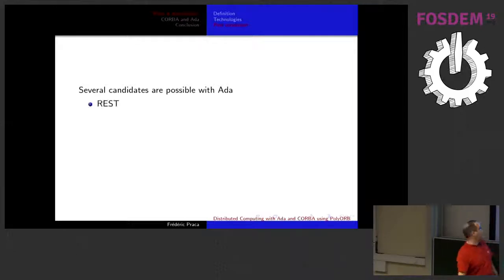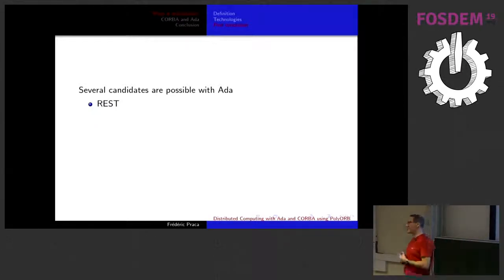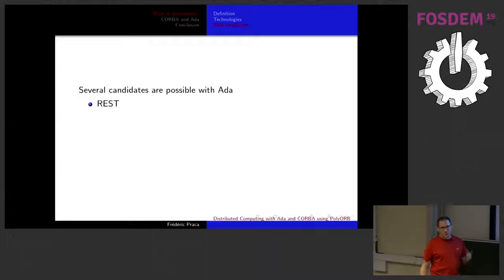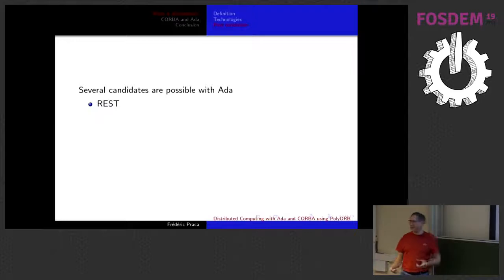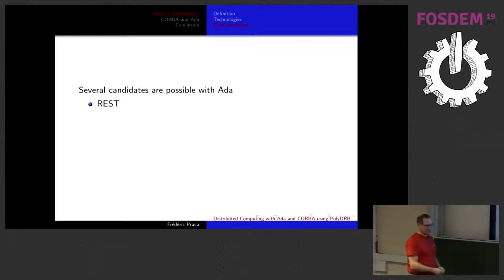Several candidates are possible with Ada. REST — easy. You have Ada Web Server, AWS, and you can do REST because REST is only listening to HTTP verbs and providing a text in exchange — text, XML, or something else. But anyway, we will agree that it's not really strict without strict typing. So for Ada, it's not something we will use. And a note for Stéphane: OpenAPI is not something to describe data correctly, from my point of view.